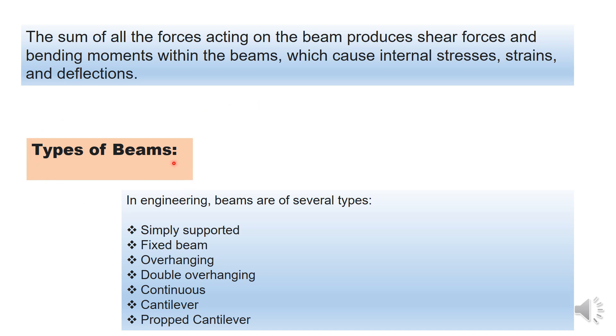Types of beam. In engineering, there are several ways of classifying beam, but we are classifying them based on the support. The first one is simply supported beam, fixed beam or fixed ended beam, overhanging beam, double overhanging beam, continuous beam, cantilever beam, and propped cantilever beam.